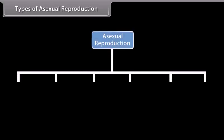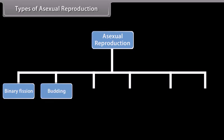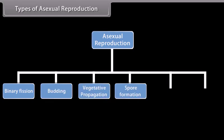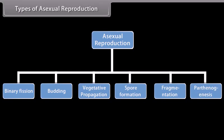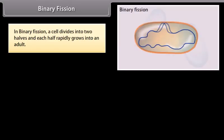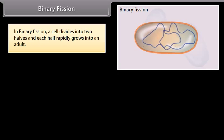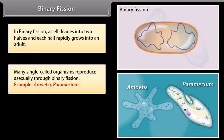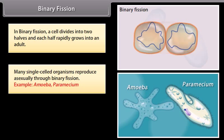Types of asexual reproduction: Do you know how organisms reproduce asexually? An organism may reproduce asexually by binary fission. In binary fission, a cell divides into two halves, and each half rapidly grows into an adult. Many single-celled organisms reproduce asexually through binary fission.